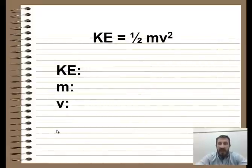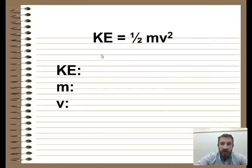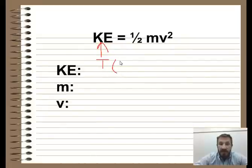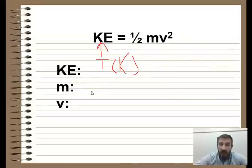Kinetic energy equals one-half mv squared. This is an important equation when we talk about gases. We want to think of kinetic energy as being equivalent to temperature, and when we express this temperature we want to express it in Kelvin. They are proportional when we express temperature in Kelvin. The other variables are M for mass and V for velocity.